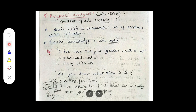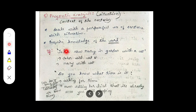The second interpretation is that John saw Mary in the garden, and Mary is holding the cat — Mary is the one having the cat with her. So the first interpretation is that John is having the cat, and the second interpretation is that Mary is having the cat. This is how two situations arise from the same sentence, and pragmatic analysis deals with determining which context to consider.